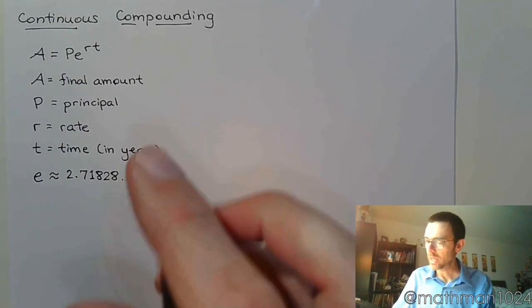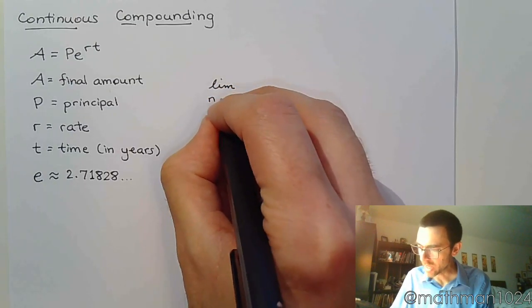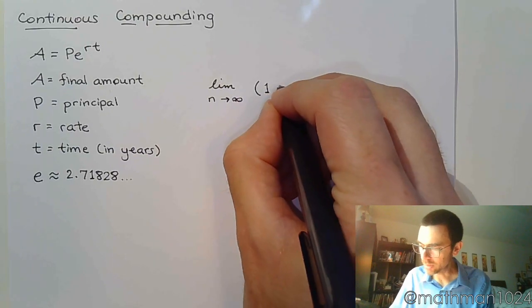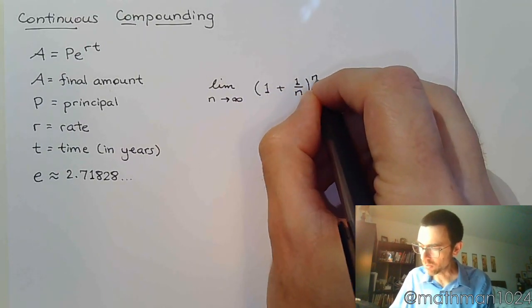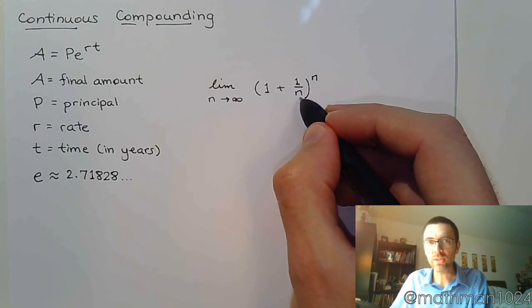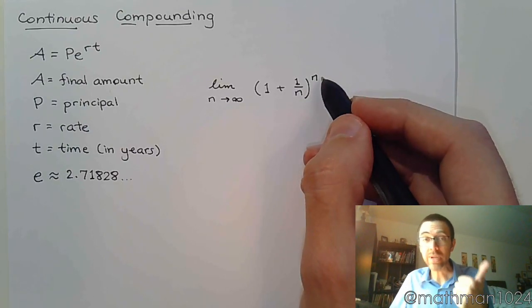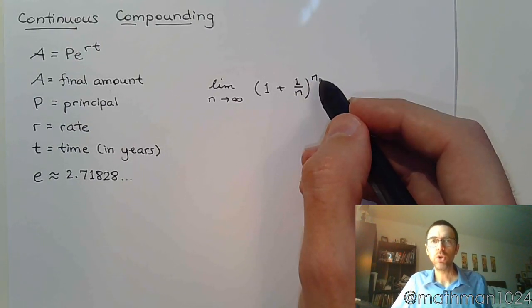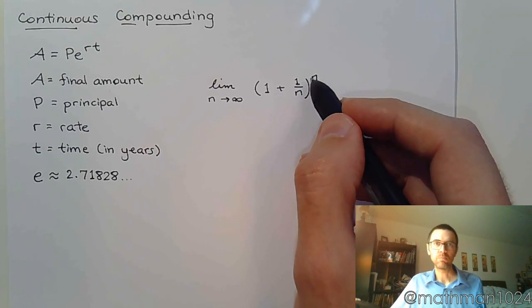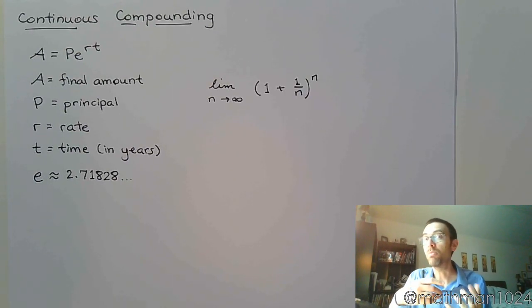There are a lot of different ways of calculating e. The most common one is a calculus thing, where you take the limit as n approaches infinity of this expression: 1 plus 1 over n raised to the n. If you keep increasing the number of compoundings per year, you earn more money but there's going to be a limit to that. That's where this formula comes in, that's where the e comes in.